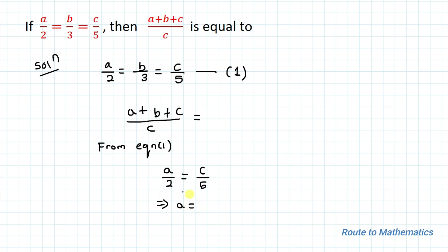We can write that a equals - if I take this 2 to the right hand side - 2 multiplied with c divided by 5. So now we have value of a: 2c/5.